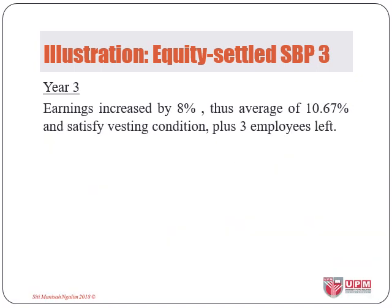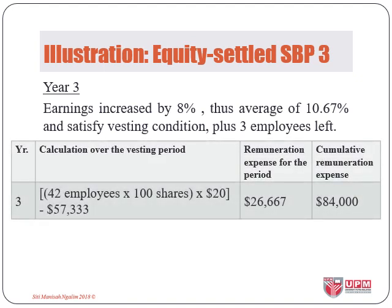In year three, earnings increased by 8%, exceeding expectations, meeting the performance target, and the scheme was vested. However, three more employees left. We record payment for 100 shares for 42 employees at $20 fair value minus amounts already recognised, giving SBP expense of $26,667. In total, we have SBP expense of $84,000, equivalent to payment for 100 shares issued to the 42 remaining employees at $20 fair value.